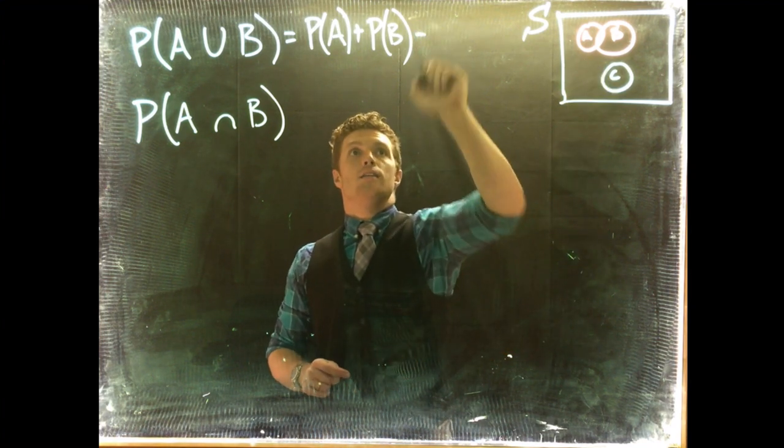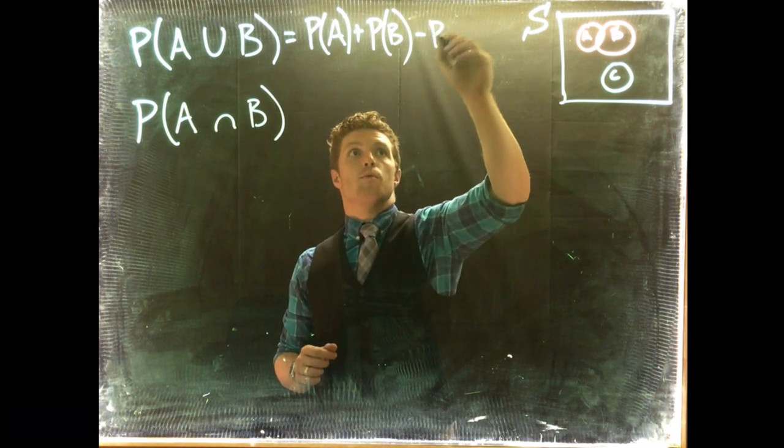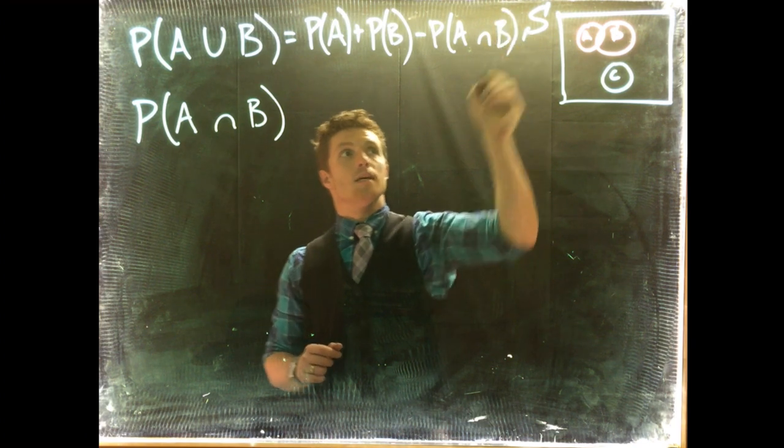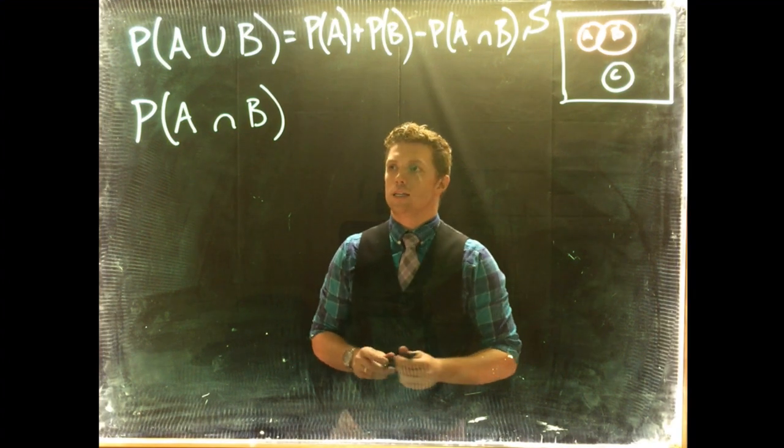If they do have overlap, we need to subtract off that overlapping region, which is the probability of A intersect B, and this is really our rule of addition with our probabilities.